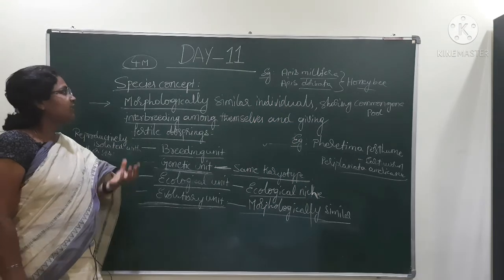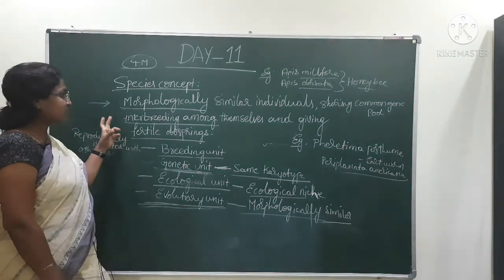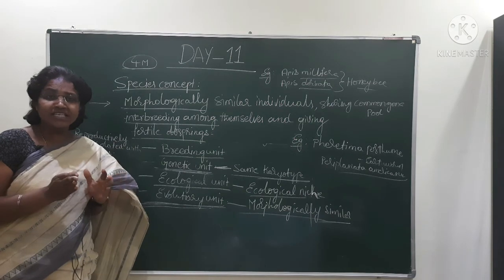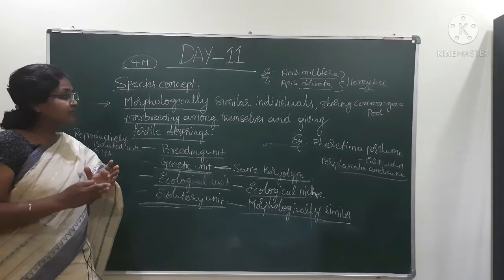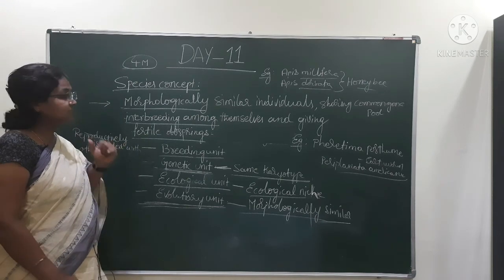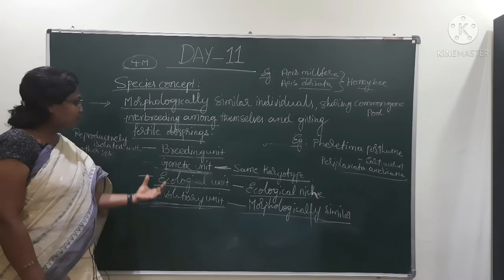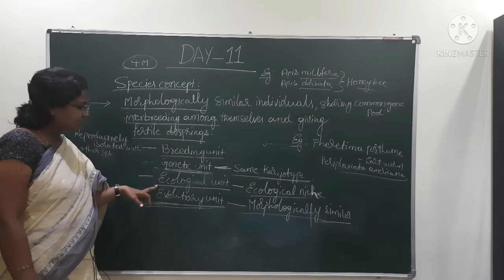Species concept: species are morphologically similar individuals sharing common gene pool and interbreeding among themselves, giving fertile offsprings. Here we have to discuss four points: breeding unit, genetic unit, ecological unit, and evolutionary unit.